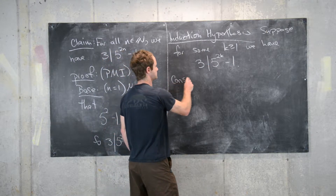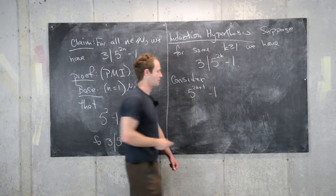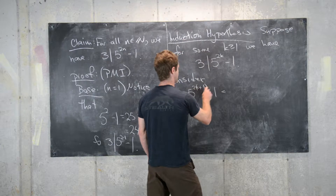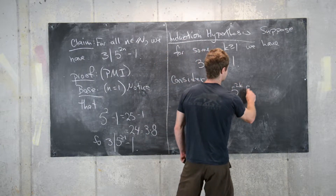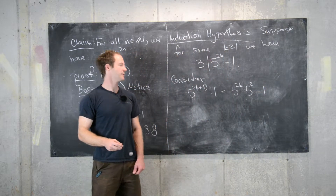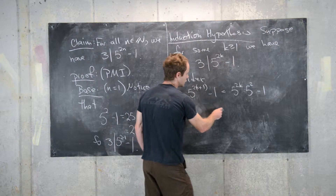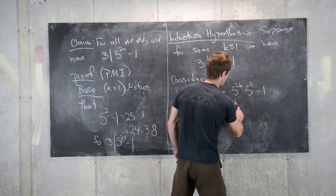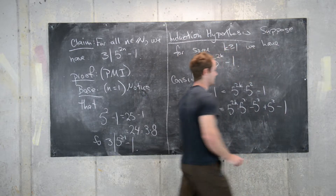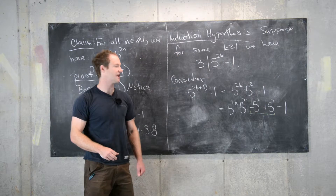We'll consider five to the two times k plus one minus one, which we can write as five to the two k times five squared minus one. There's a little trick we need to use here: we add zero in the special form of five to the two k times five squared minus five squared plus five squared minus one. Notice this added bit is just zero, so we haven't changed the number at all.